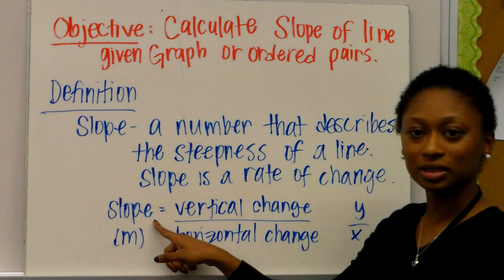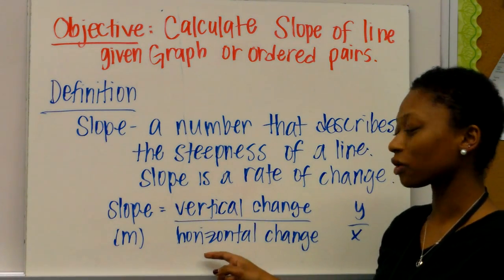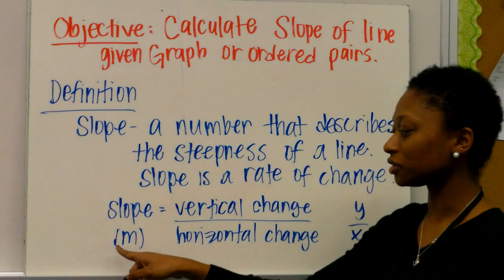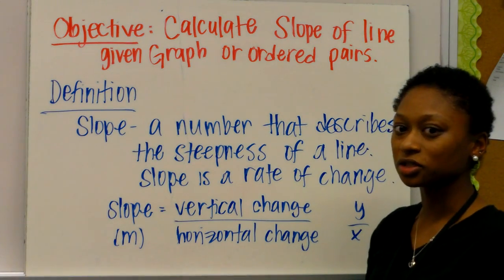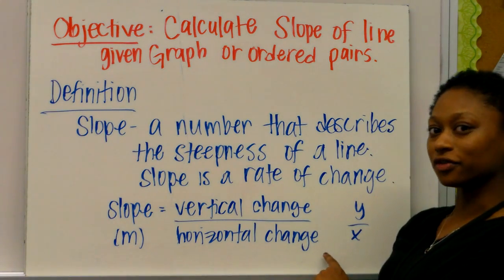Slope, in any sense, is the vertical change over the horizontal change. It's also denoted as m and can be described as y over x.